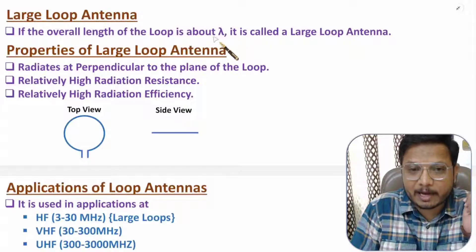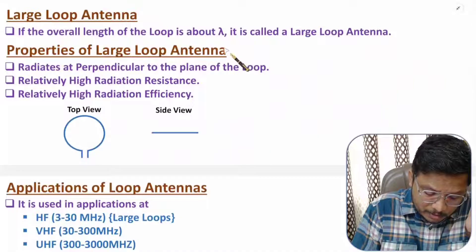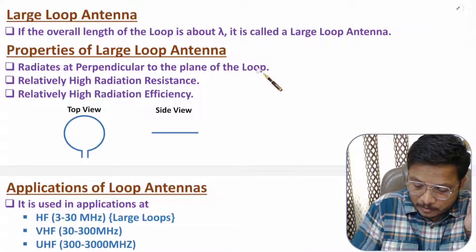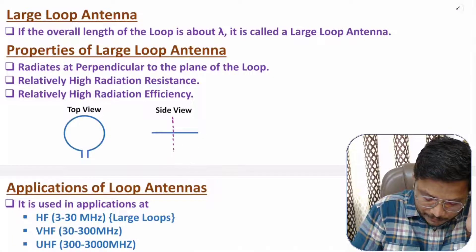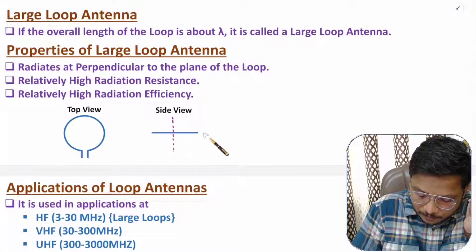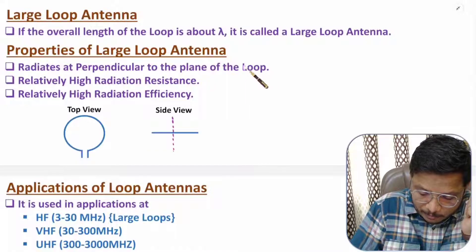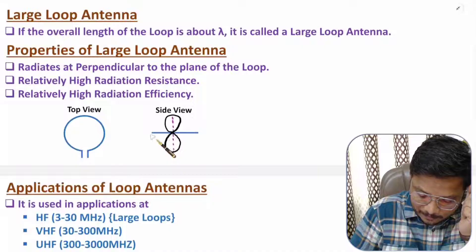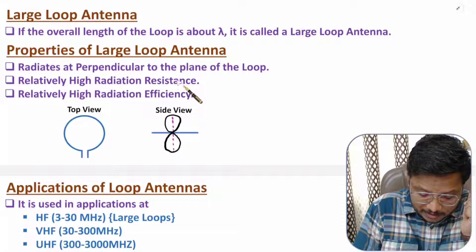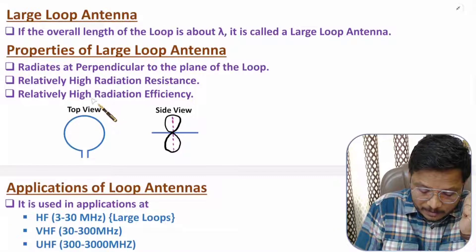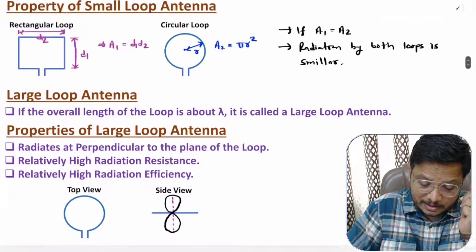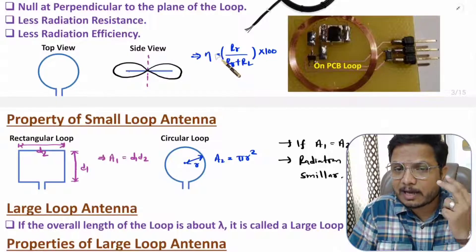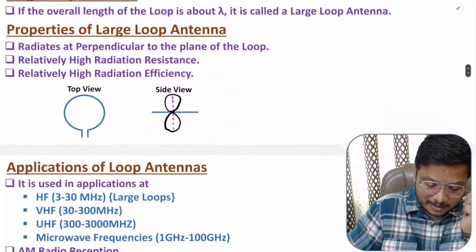If the overall length of the loop is lambda (λ), then it is a large loop antenna. With a large loop, radiation happens perpendicular to the plane of the loop — so if the loop's side view is this, then radiation occurs in that perpendicular direction. Relatively, a large loop has higher radiation resistance, and because of higher radiation resistance it has higher radiation efficiency as well.